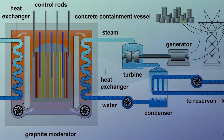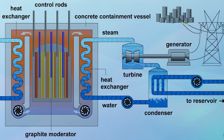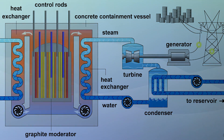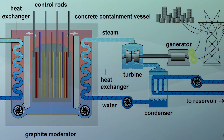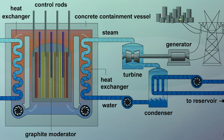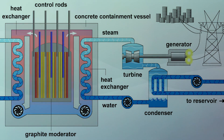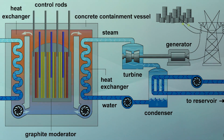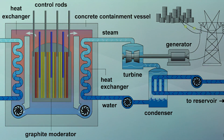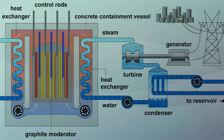How exactly? Radioactive materials release energy, and this energy is used to heat up water. When steam is finally released, it rotates a turbine, and the final output of energy is converted into electricity.